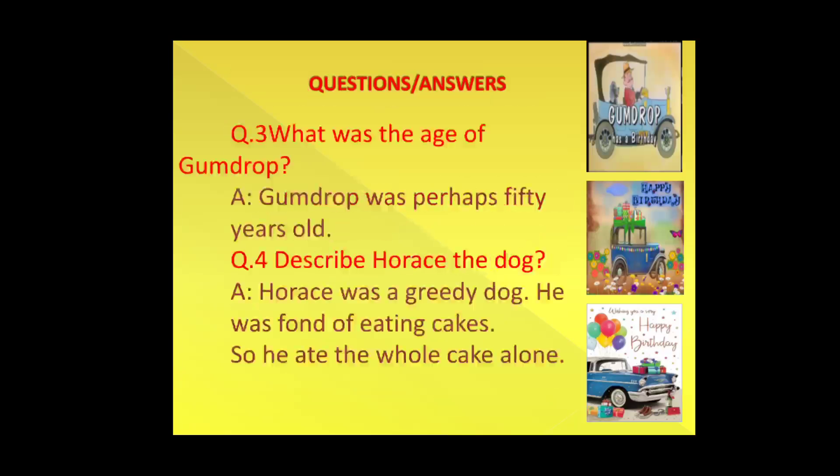Question number three: what was the age of Gumdrop? Answer: Gumdrop was perhaps 50 years old. You have read in the text that it was Gumdrop's 50th birthday, so we can say that Gumdrop was perhaps 50 years old. Question number four: describe Horace the dog. Answer: Horace was a greedy dog. He was fond — F-O-N-D — of eating cakes, so he ate the whole cake alone.